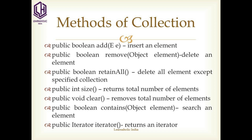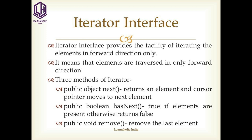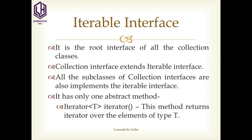Public iterator iterator() returns an iterator. What is the iterator interface? The iterator interface provides the facility of iterating elements in the forward direction only, meaning traversal of elements is done only in the forward direction. There are three methods of iterator interface. The first method, public Object next(), returns an element and moves the cursor pointer to the next element. The second method, public boolean hasNext(), returns true if elements are present, otherwise returns false. The third method, public void remove(), removes the last element returned by the iterator. Iterator is the root interface of all collection classes. The collection interface extends the iterable interface, and all subclasses of the collection interfaces also implement the iterable interface. The iterable interface has only one abstract method, iterator(), which returns the iterator over elements of type T.